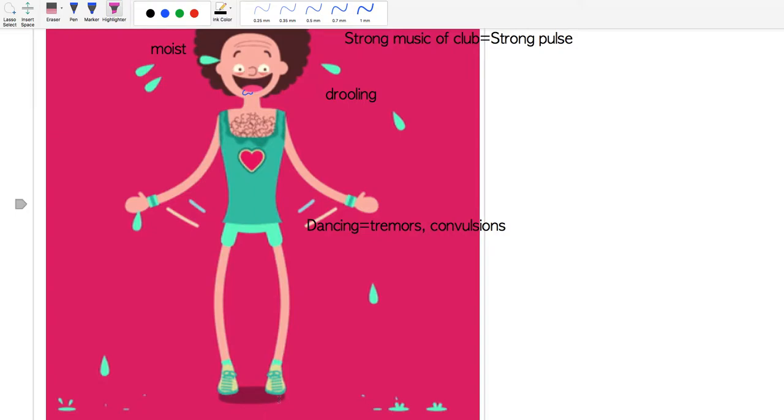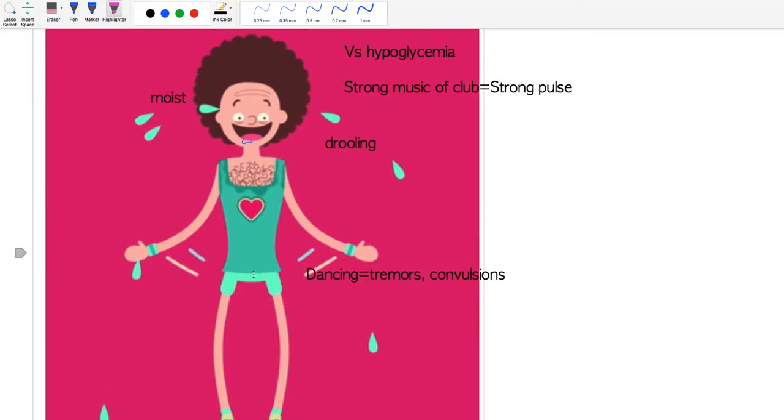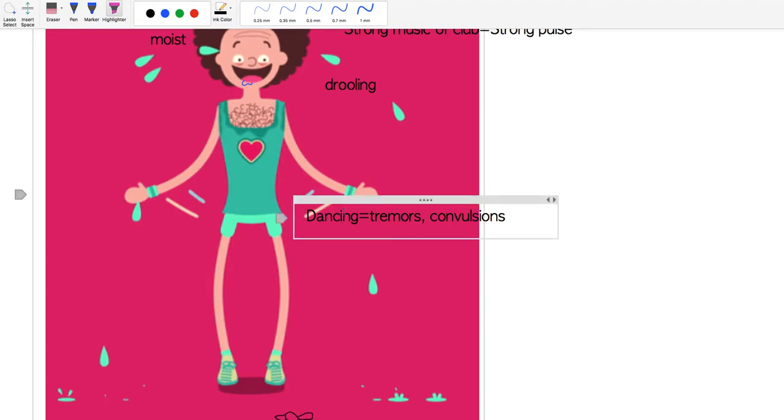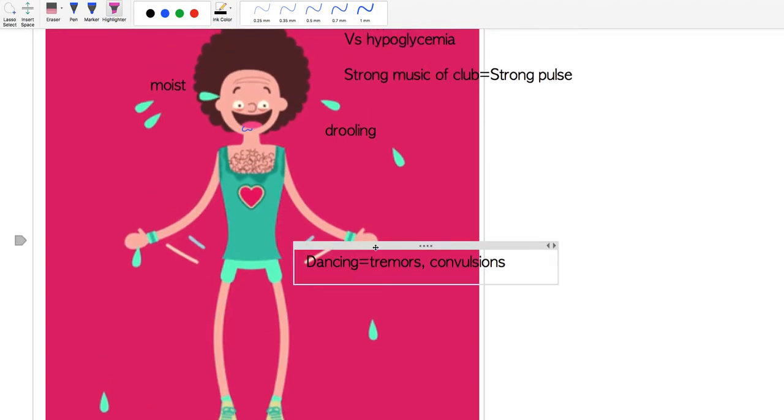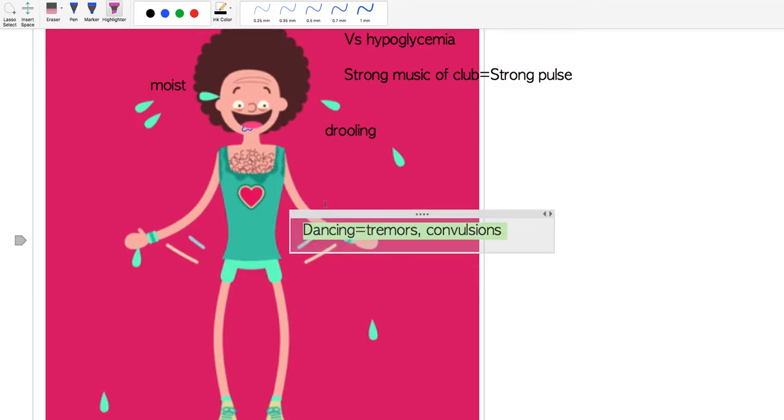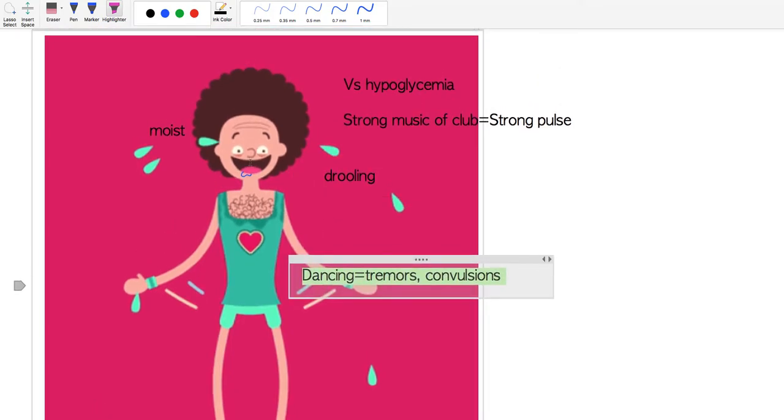This is represented by candy on the floor - there's no tables because this is a dancing space. You can see he's dancing, which represents the tremors and convulsions seen in hypoglycemia. Drooling here and moisture being representative of hypoglycemia.